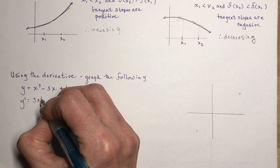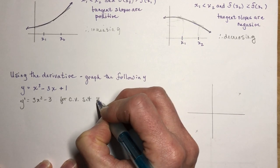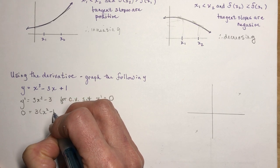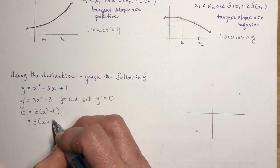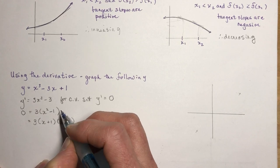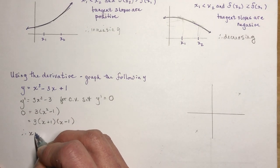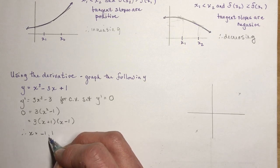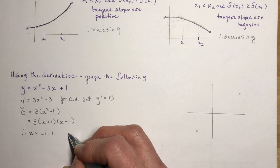Take the derivative: y' = 3x² - 3. For critical values, set y' equal to zero. Factoring out a 3 gives a difference of squares that factors again. We're finding where the slope is zero — where the function has a maximum or minimum value.